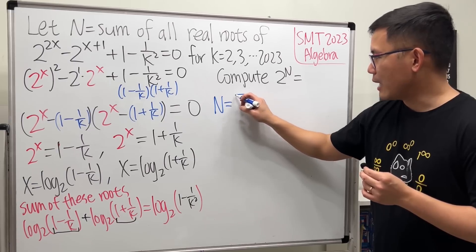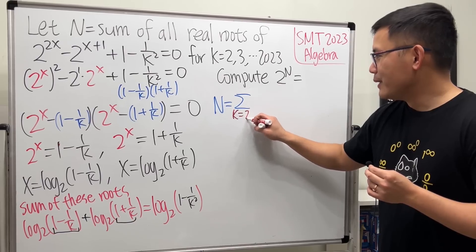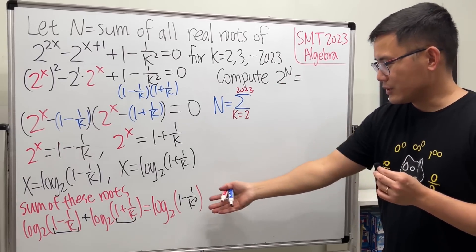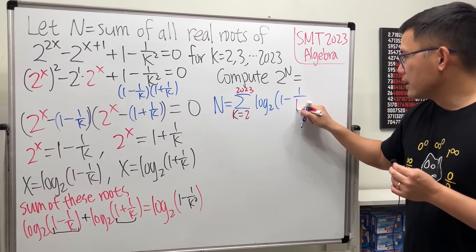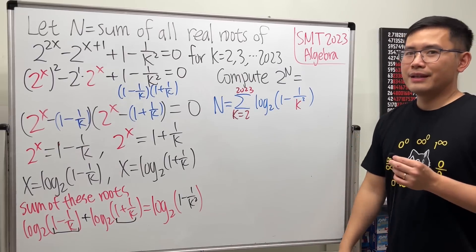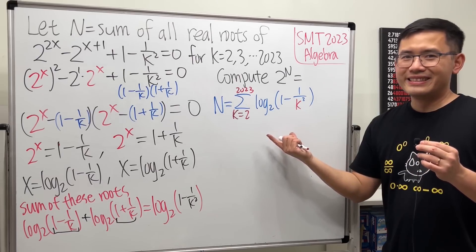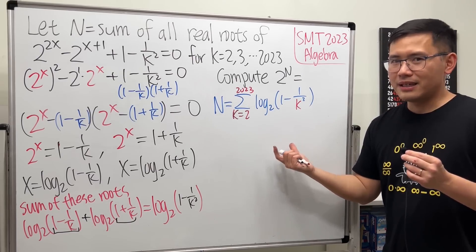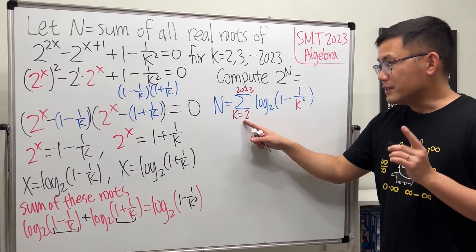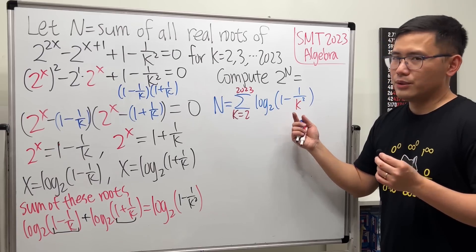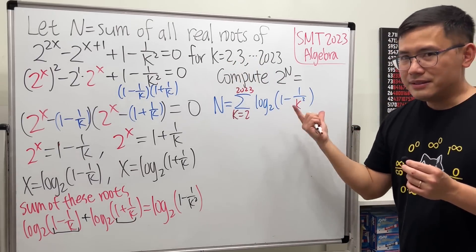N equals the summation as k goes from 2 to 2023 of log₂(1 minus 1/k²). If we can figure this out, then at the end we just do 2 to the Nth power and we're done. This turns out to be a telescoping series in the multiplication sense. If you put k equals 1, you get log₂(0), which is undefined — that's why k cannot equal 1. But that doesn't matter here; the series telescopes.